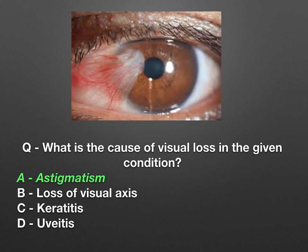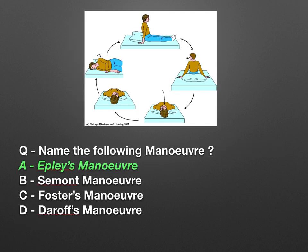Now this is a picture of pterygium. They haven't asked what this is — they are asking what is the cause of visual loss in pterygium. The options are astigmatism, loss of visual axis, keratitis, and uveitis. The answer is astigmatism.